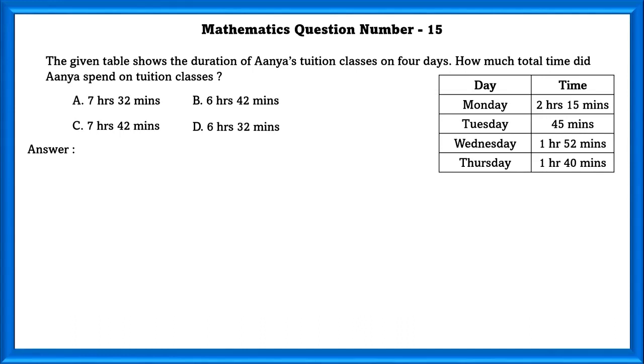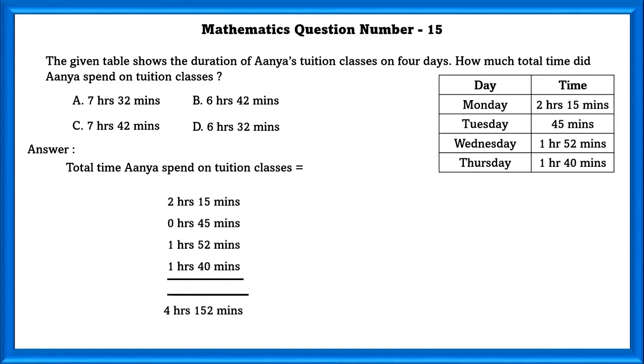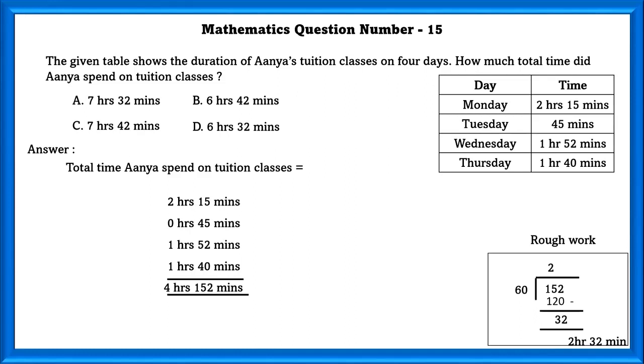Mathematics question number 15. The given table shows the duration of Ananya's tuition classes on 4 days. How much time did she spend on tuition classes? In order to find how much time she spent in her tuition classes, we have to add Monday, Tuesday, Wednesday and Thursday timings. If we do that, we will get 4 hours, 152 minutes. And 1 hour is equal to 60 minutes. So, if we divide 152 by 60, we will get 2 hours, 32 minutes.